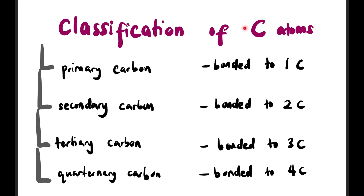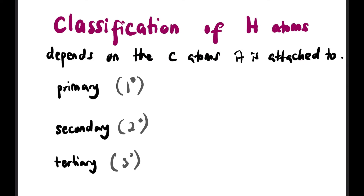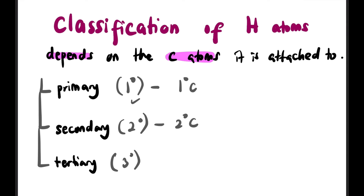Now let's learn how to classify carbon atoms. There are 4 classes: primary carbon, secondary carbon, tertiary carbon, and quaternary carbon. The classification depends on how many carbon atoms are bonded to that carbon. If only 1 carbon is attached — it's primary; 2 carbons — secondary; 3 carbons — tertiary; 4 carbons — quaternary. For hydrogen, classification depends on the class of carbon it's attached to — attached to primary carbon means primary hydrogen, and so on.